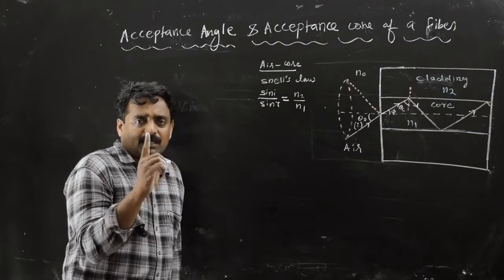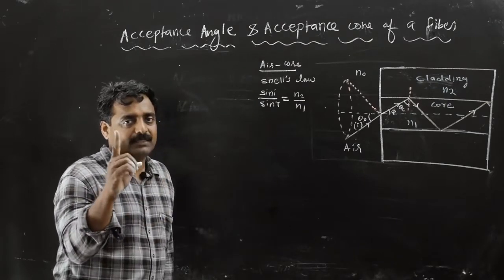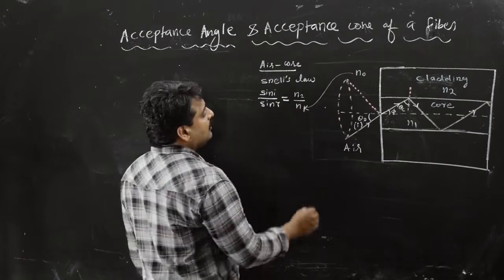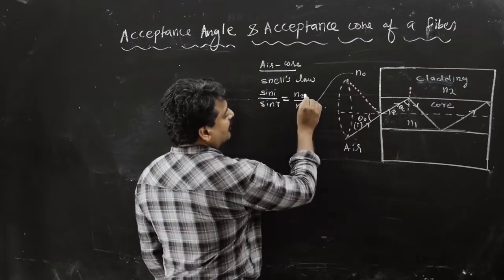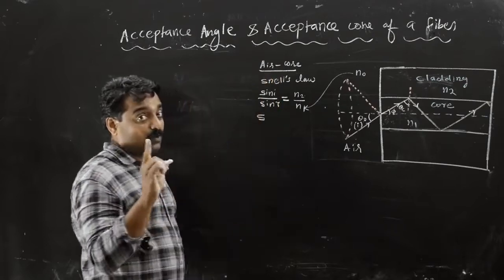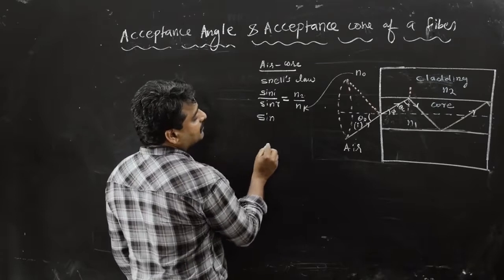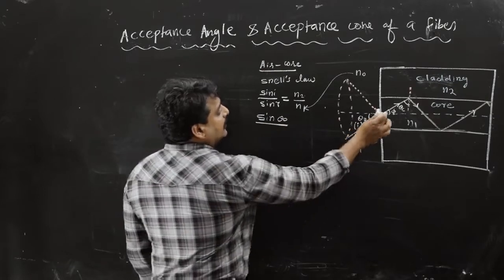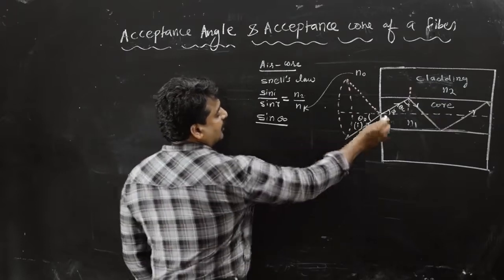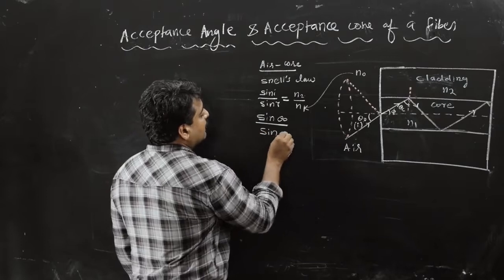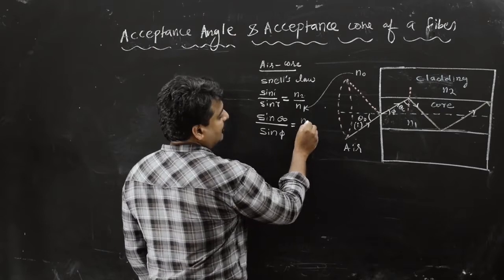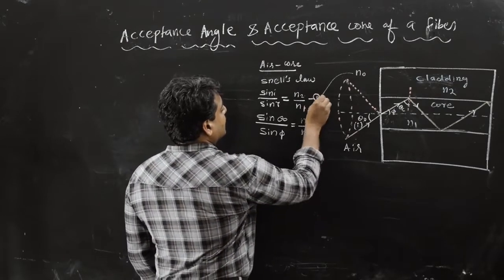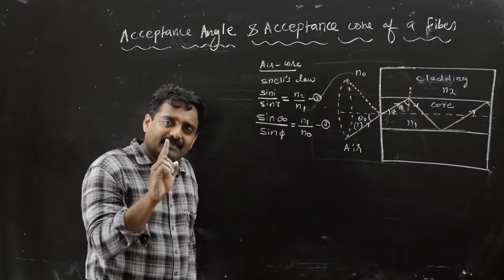Here n1 is the refractive index of the first medium and n2 is the refractive index of the second medium. So sin phi equals n1 by n0. This is equation number 1, and the Snell's law form with acceptance angle is equation number 2.